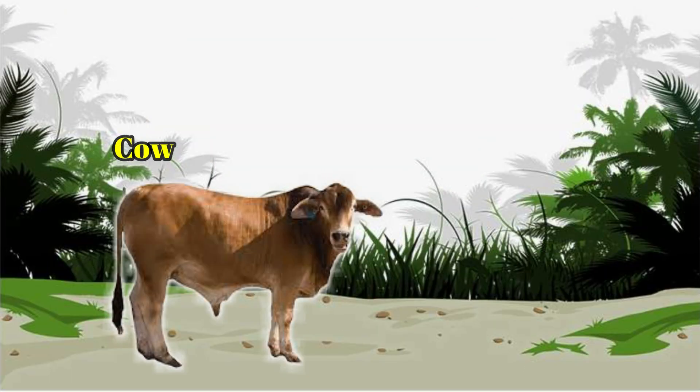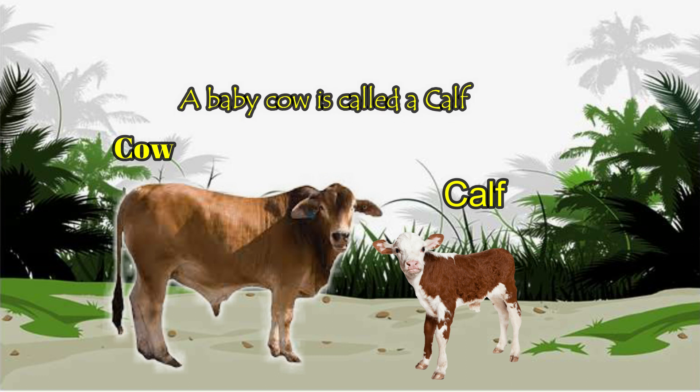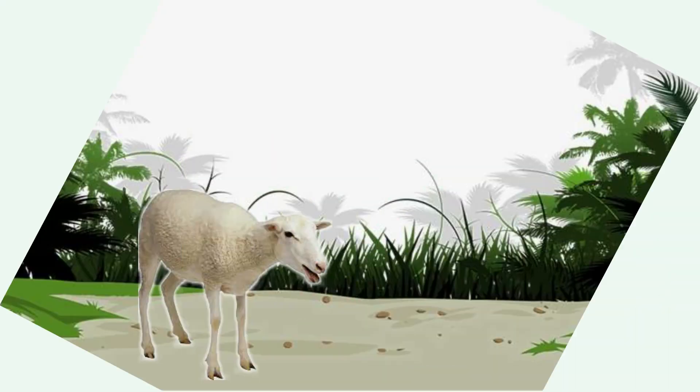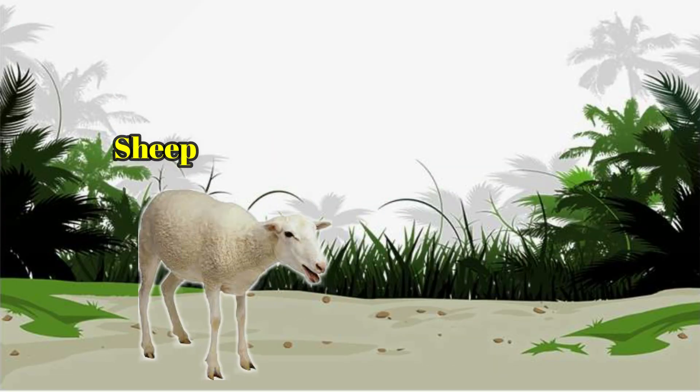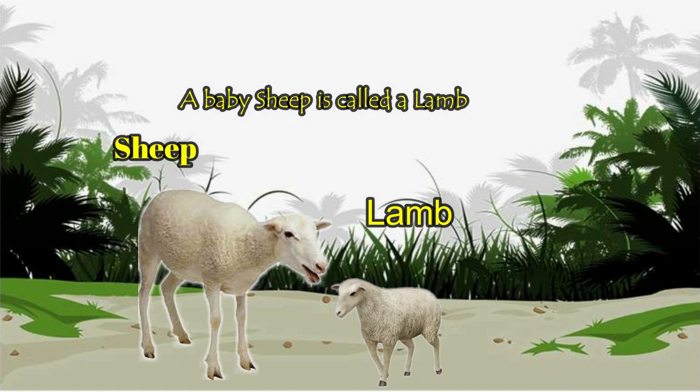Cow. Calf. A baby cow is called a calf. Sheep. Lamb. A baby sheep is called a lamb.